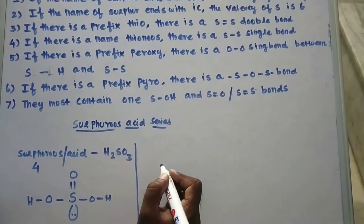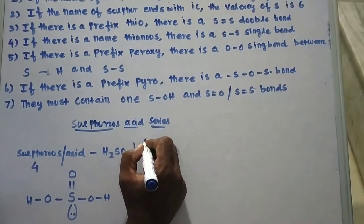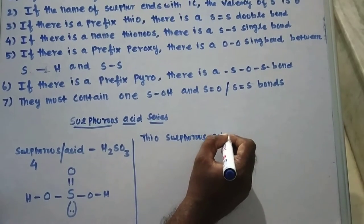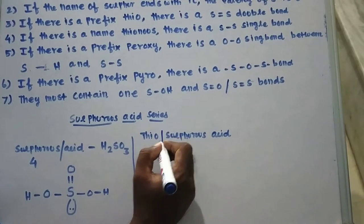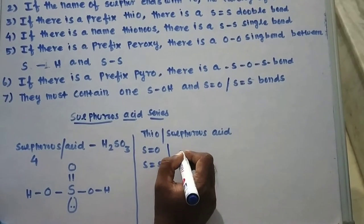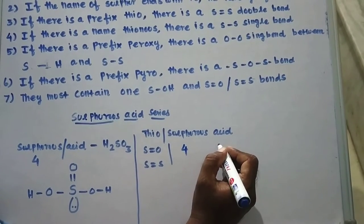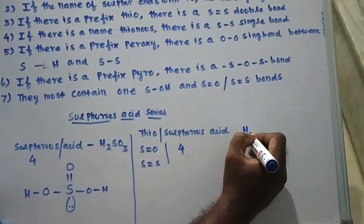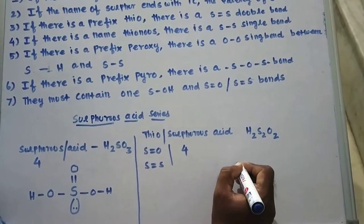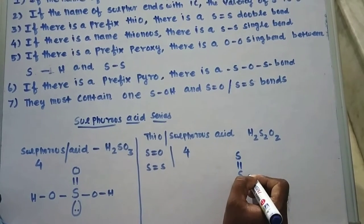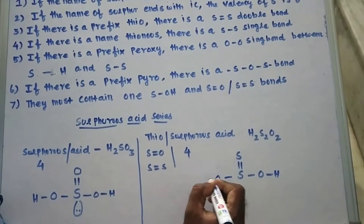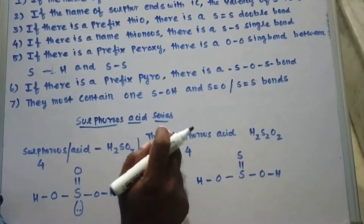Next we are going to see thiosulfurous acid. Thio means the S=O bond is replaced with an S=S bond. Sulfurous acid has formula H₂SO₃, so thiosulfurous acid has an S=S bond. Then there is an OH group, and with the remaining hydrogen and oxygen, it also becomes another OH. This is the structure of thiosulfurous acid.